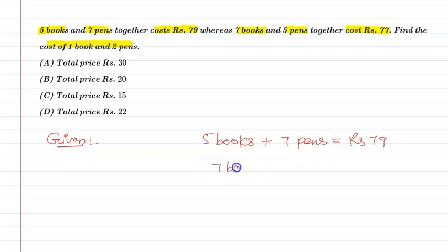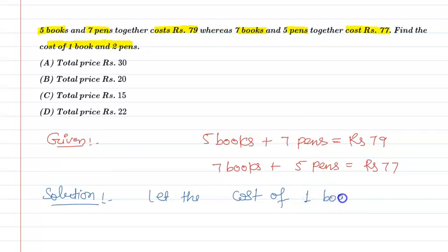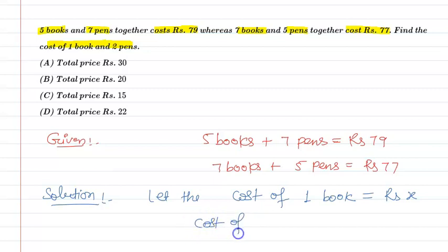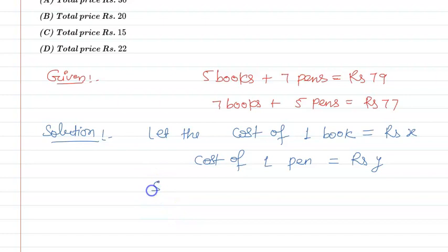And seven books plus five pens cost equal to rupees 77. Now let's move on to the solution part. First of all, let the cost of one book be equal to rupees x, and cost of one pen be equal to rupees y.